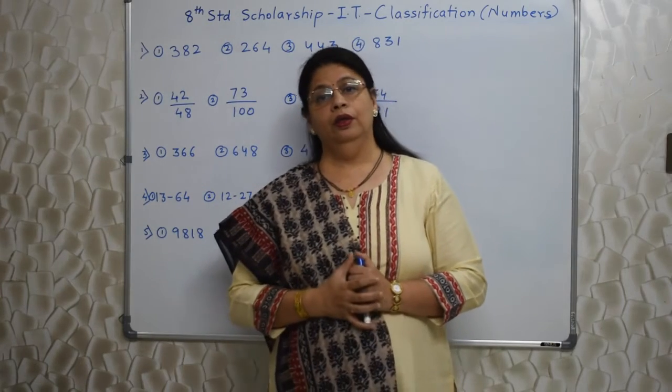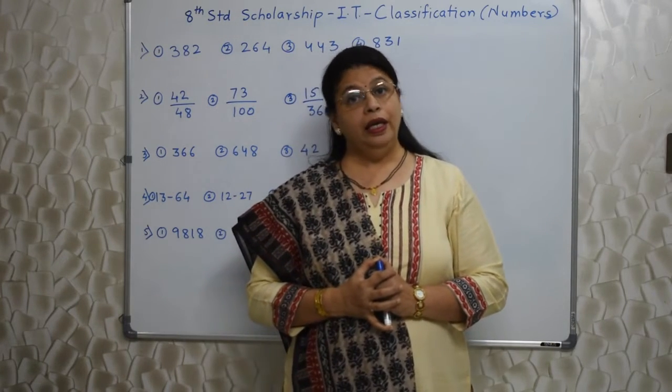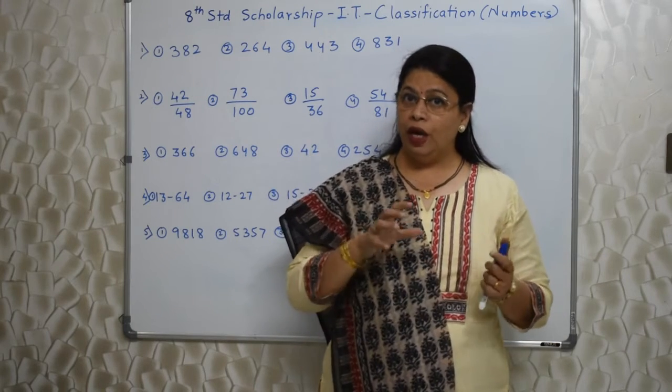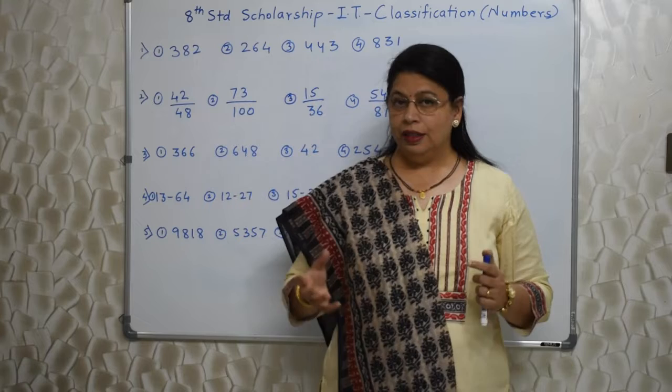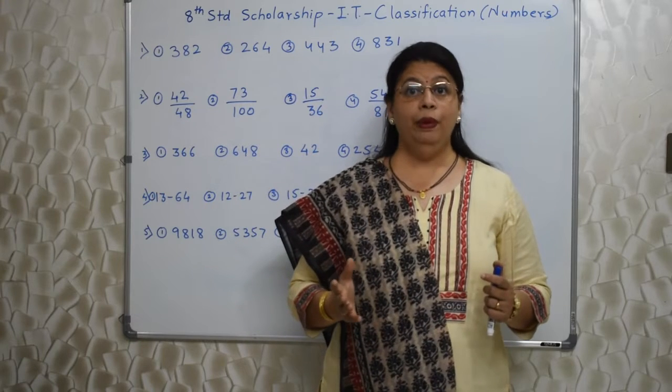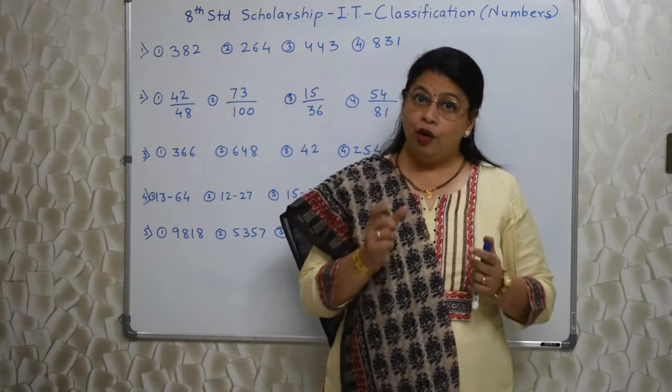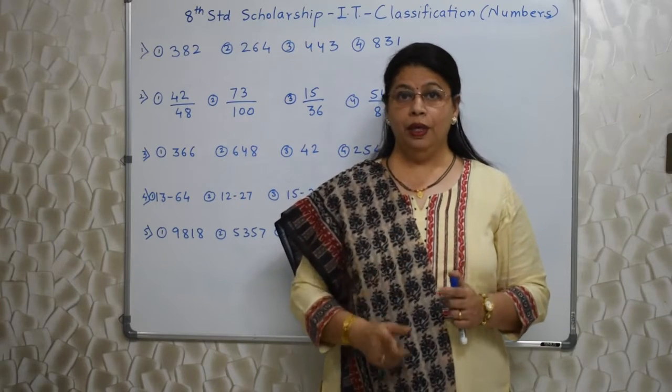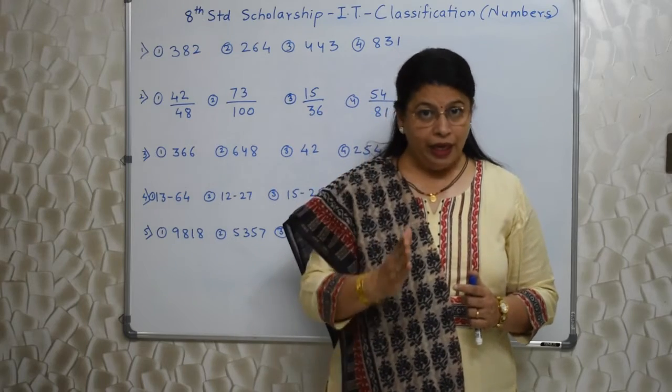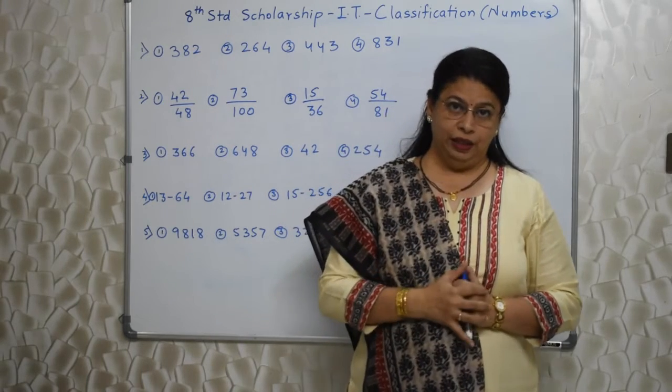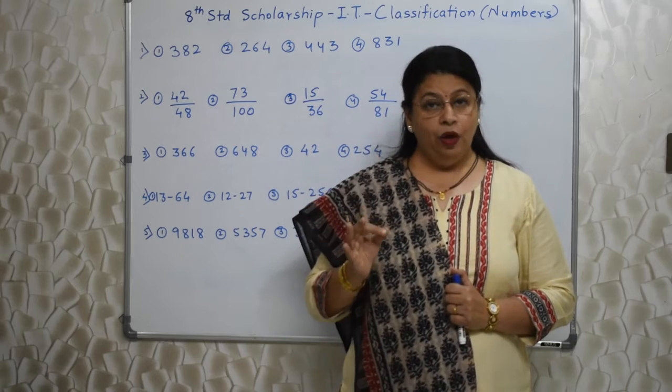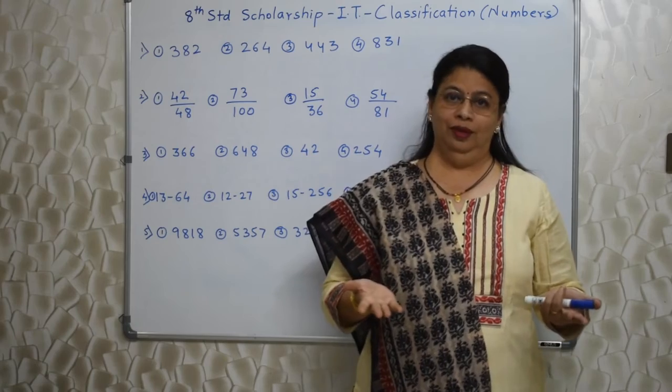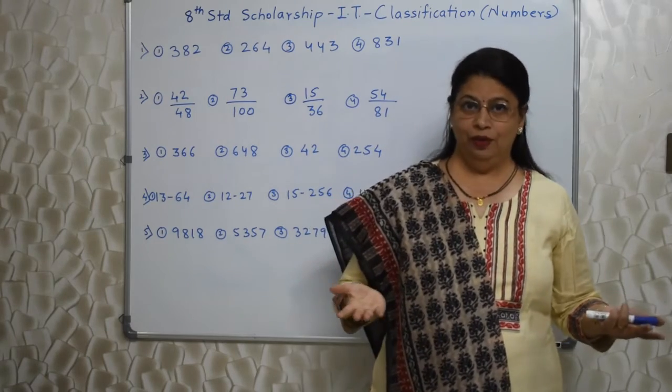But we need to observe the numbers properly and identify how are they related. And one more thing I want to tell you. In case there is four digit number or three digit number and you cannot identify the class, try to break those numbers. It may not be four digit number. It may be a combination of two two digit numbers. So you have to observe the numbers. If need arises, break the numbers and then try to find out how are they related. I again repeat, operations involved will be very basic and which you all know based on types of numbers.